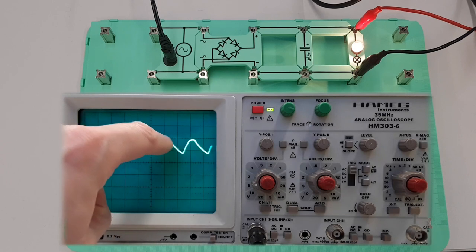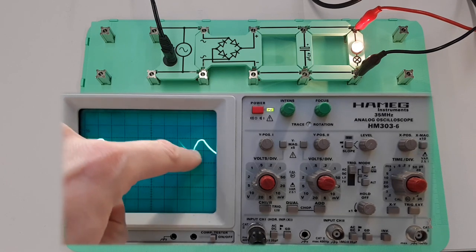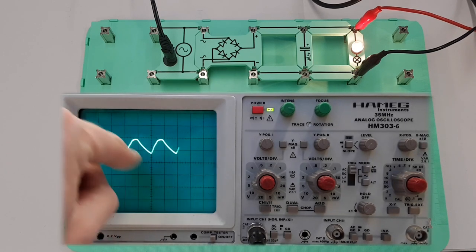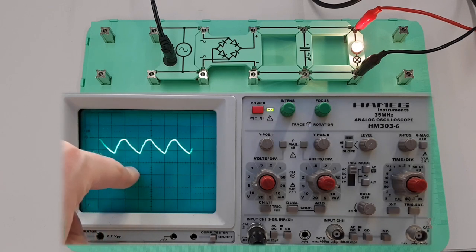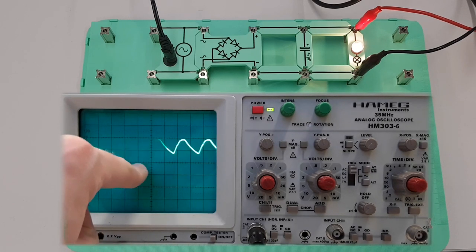This means that we can start to see we're sort of smoothing off this bumpy waveform. You can see it doesn't go all the way to the bottom there now. It now goes to about there.